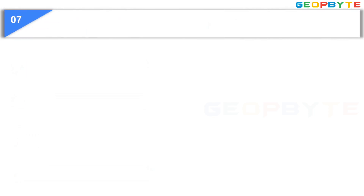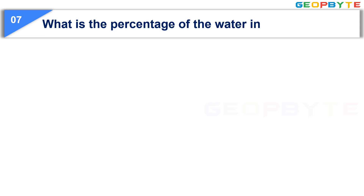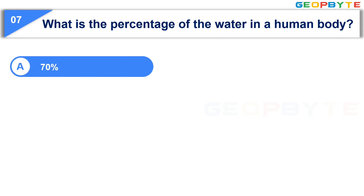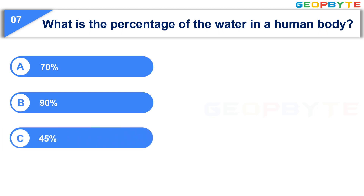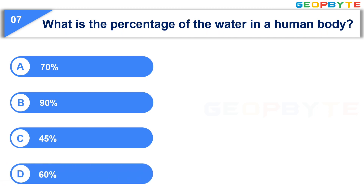Let us see the next question: What is the percentage of water in a human body? Option A: 70%. Option B: 90%. Option C: 45%. Option D: 60%. Your time starts now.